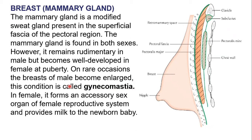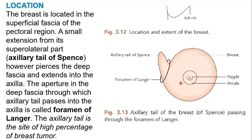In the female, the breast acts as a reproductive organ to feed the baby. This part shows the presence of the axilla. This is the breast, this is the nipple, and around the nipple is called the areola. The extension of the breast towards the axilla is called the axillary tail of Spence.